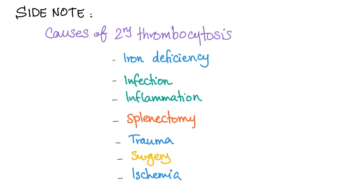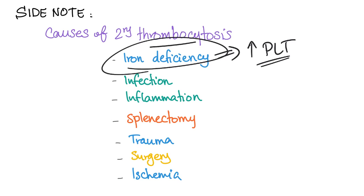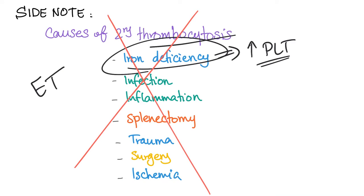Causes of secondary thrombocytosis include iron deficiency, infection, inflammation, splenectomy, trauma, surgery, and ischemia. If you recall iron deficiency anemia, sometimes platelet counts are increased because iron deficiency leads to thrombocytosis. You must exclude all of these causes before diagnosing the patient with ET.